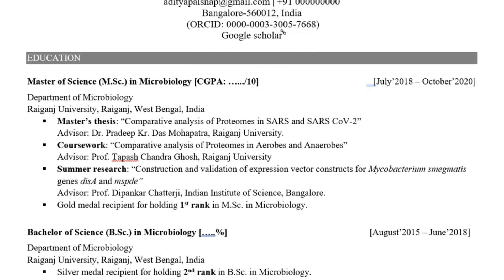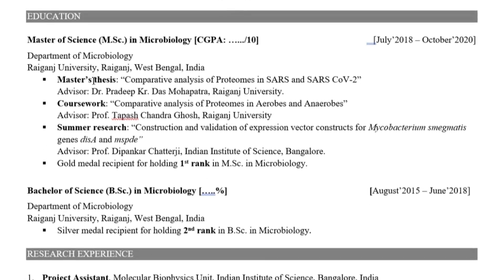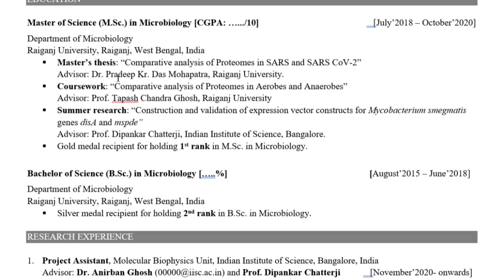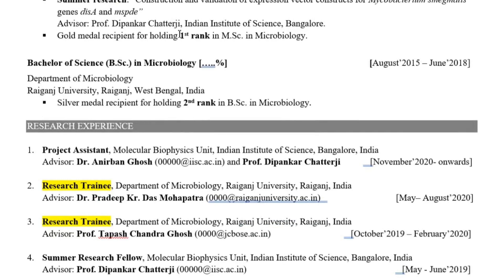In the education section, mention all your degrees, marks, time periods, locations, and achievements obtained during those degrees. For example, during your master's, if you did project work, internships, or other significant activities — not just a regular class — you can mention those along with the advisor's name. If you ranked first, second, or third in your class, mention that too. For your bachelor's degree, include the subject, percentage or CGPA, and any notable achievements.